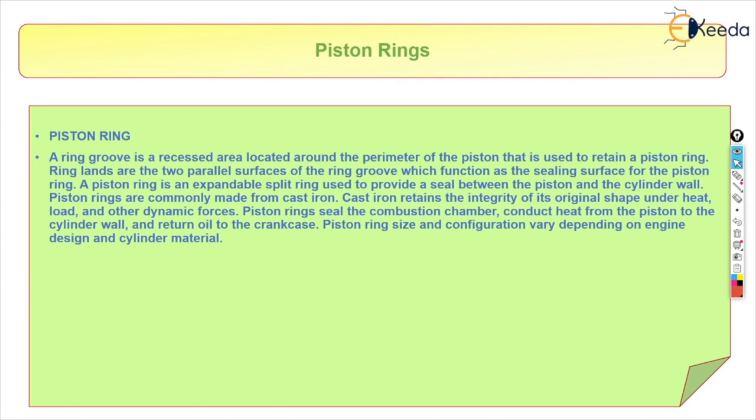A piston ring is an expandable split ring used to provide a seal between the piston and the cylinder wall. The piston rings are commonly made from cast iron, and the cast iron retains the integrity of its original shape under the heat load and other dynamic forces. That is why we use cast iron.